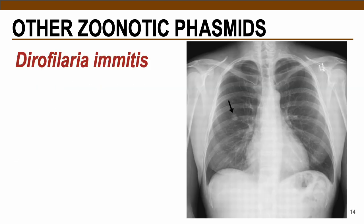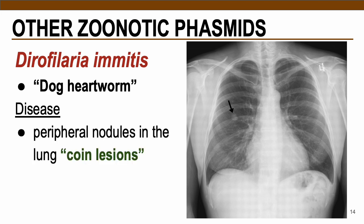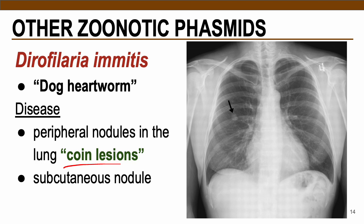The next parasite is Dirofilaria immitis — the dog heartworm. This attacks the heart of its definitive host, the dogs. In humans, we accidentally acquire this parasite, which causes peripheral nodules in the lungs termed as coin lesions — subcutaneous nodules usually present at the lungs.